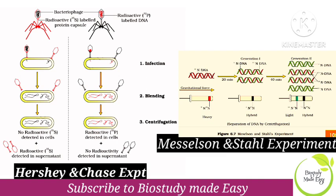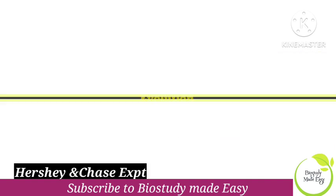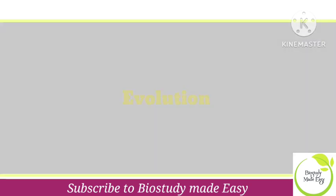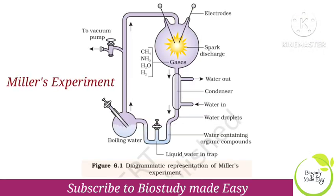Next chapter is Evolution. One important diagram is Miller's Experiment — Miller's experiment is a really very very important diagram. So each chapter has one important diagram to note carefully.